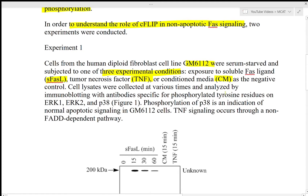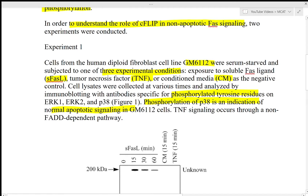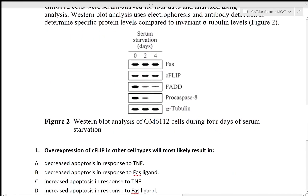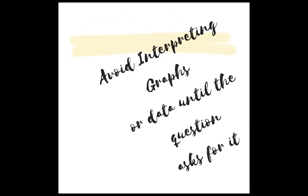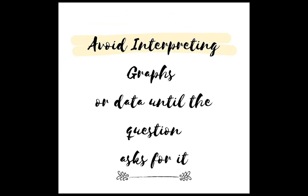I made a note of the dependent variable but didn't actually highlight it. Instead I highlighted phosphorylated tyrosine residues. Phosphorylation of p38 is an indication of normal apoptotic signaling. The two figures here bring me to my next point: avoid interpreting graphs or data until the question specifically asks for it. This will save you a lot of time because sometimes the questions don't even ask about the figures.